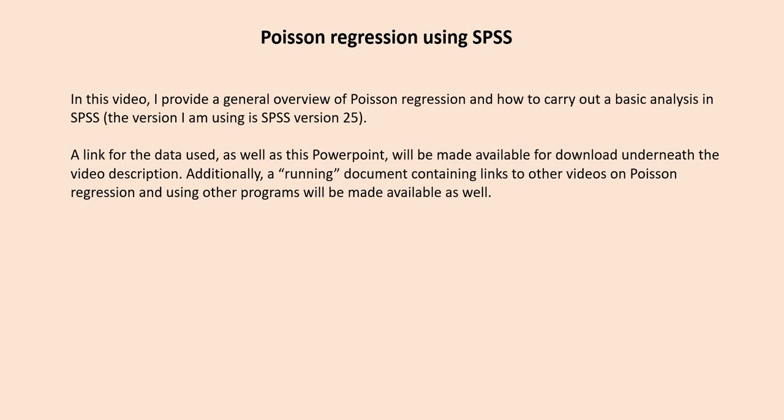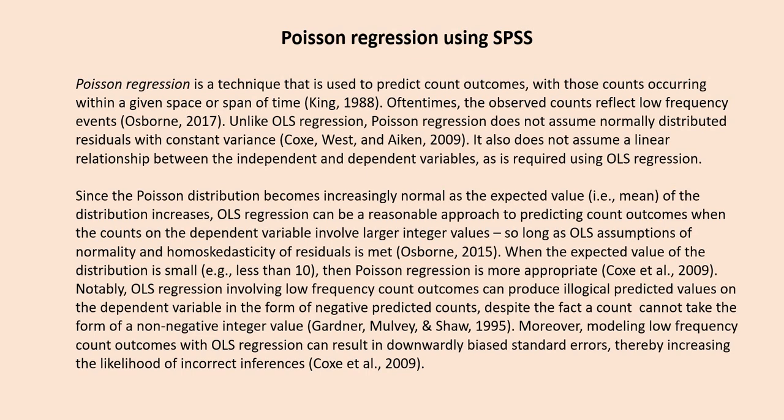So let's start off with our overview. Poisson regression is a technique that is used to predict count outcomes, with those counts occurring within a given space or span of time. Often times the observed counts reflect low frequency events. Unlike OLS regression, Poisson regression does not assume normally distributed residuals with constant variance, and it also does not assume a linear relationship between the independent variables and the dependent variables as is required using OLS regression.